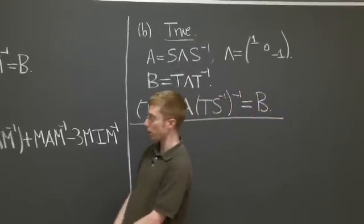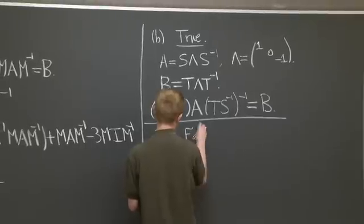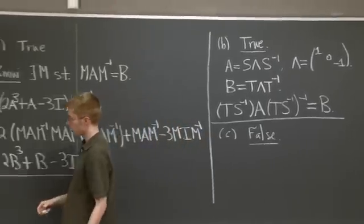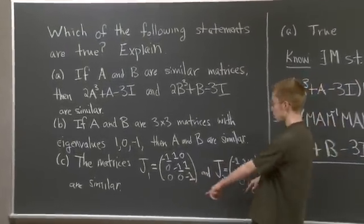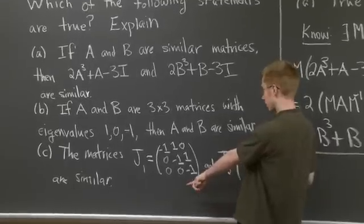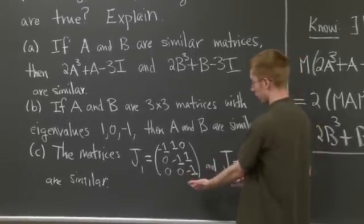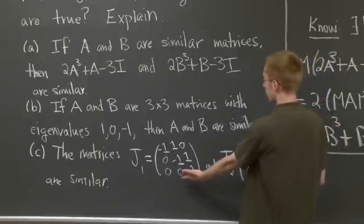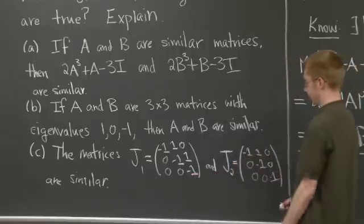Now let's take on part C. So part C is false. Let's come back over here and look at these two matrices, J1 and J2. Well, the first thing you should see is that these two are Jordan blocks, and they're different, or they're, sorry, not Jordan blocks. They're matrices in Jordan normal form, and they're different matrices in Jordan normal form, so they will not be similar. But let's actually see why.